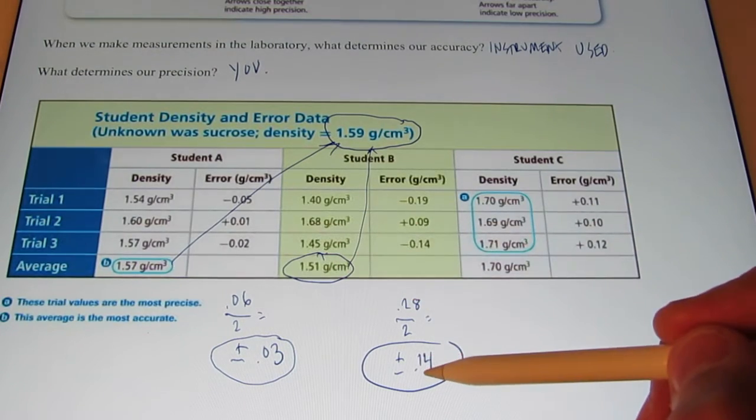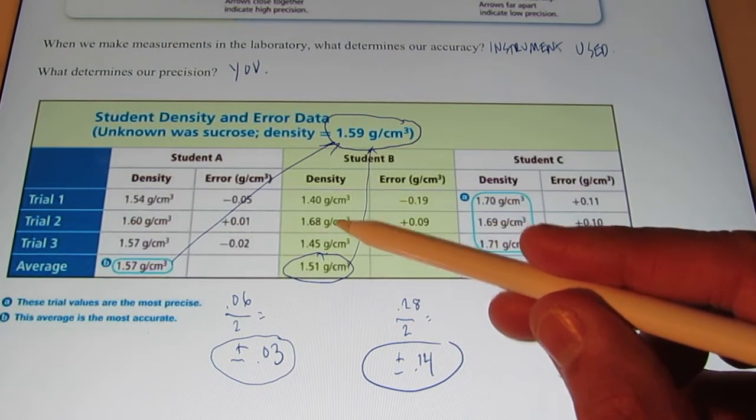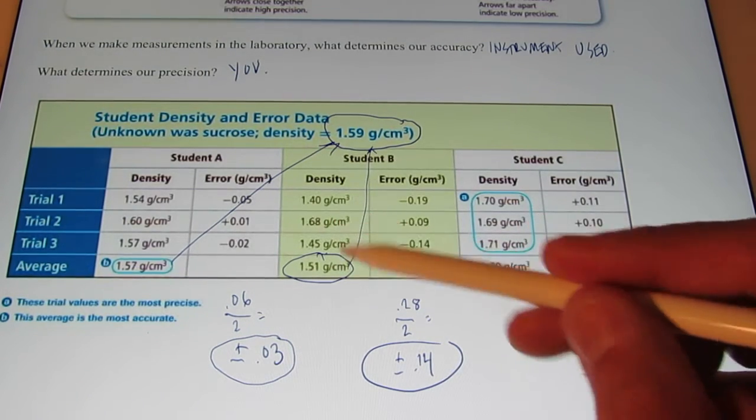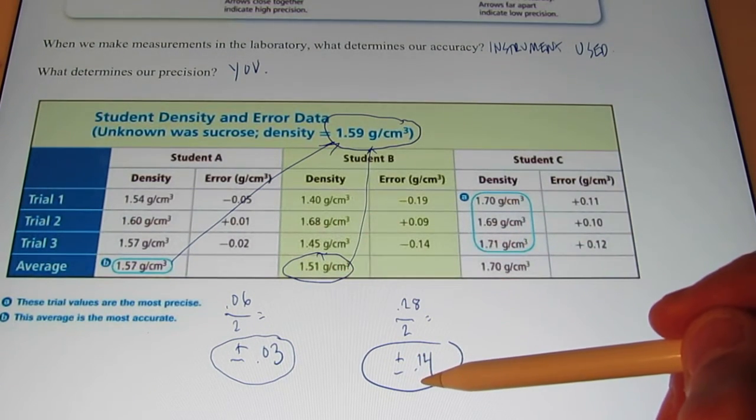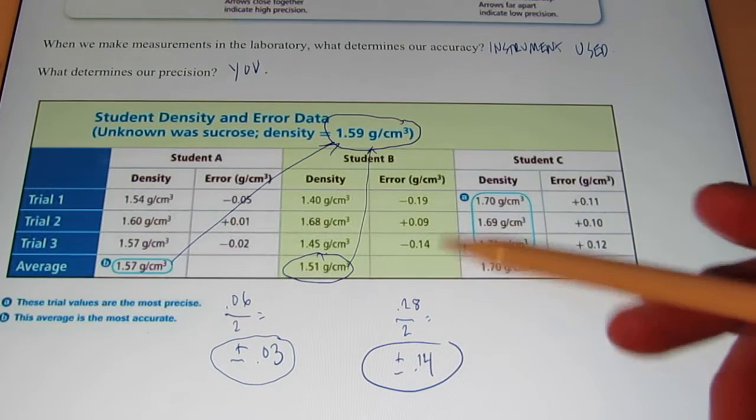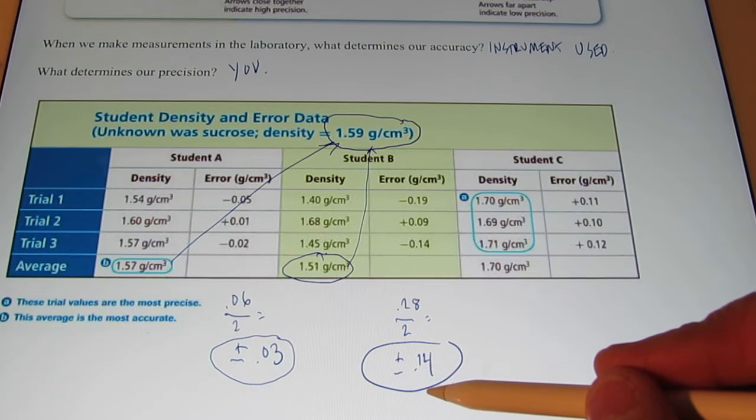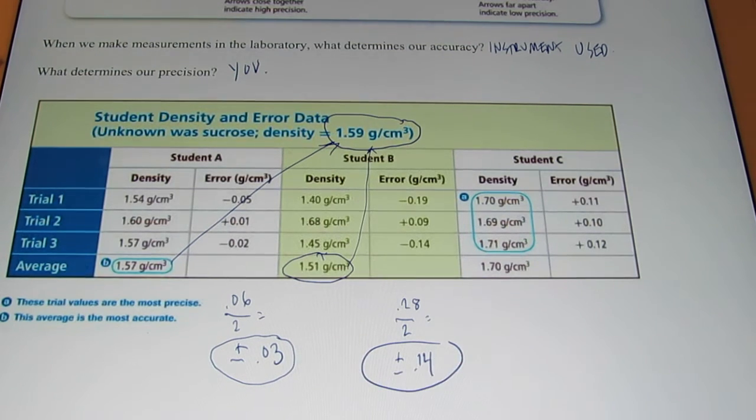So if I took 0.14, that would get me close to my high value. And if I added 0.14 to my average, that would get close to my high value. If I subtracted 0.14, that would get close to my low value. So obviously this student's precision is much worse than student A.